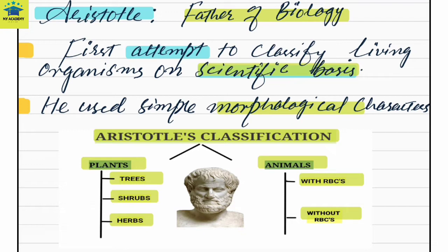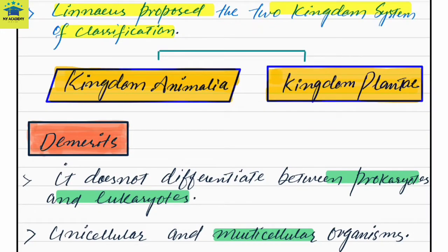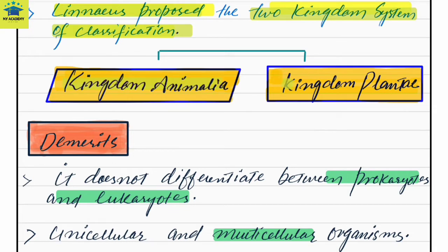So Aristotle classified living organisms into plants and animals. Plants were divided into trees, shrubs, and herbs; animals into those with blood and without blood. After Aristotle, came Carolus Linnaeus, also called the father of taxonomy. He gave the two-kingdom system of classification, dividing living organisms into Kingdom Animalia and Kingdom Plantae.